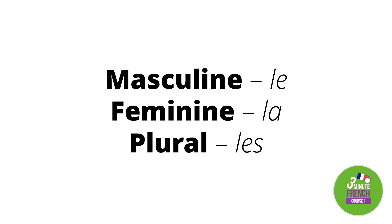So 'le', 'la', and 'les' are the definite articles in French. The version you use depends on whether the noun it goes with is a masculine noun, a feminine noun, or a plural noun. If it's plural, it doesn't matter whether it's masculine or feminine — you simply use 'les'. So you put 'le' in front of nouns that are masculine and singular, 'la' in front of nouns that are feminine and singular, and 'les' in front of nouns that are plural.